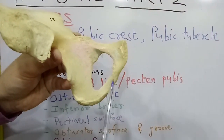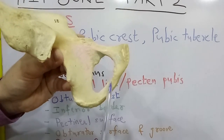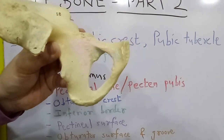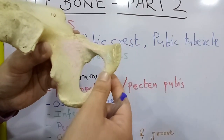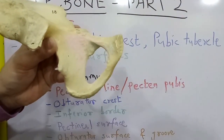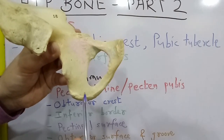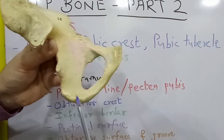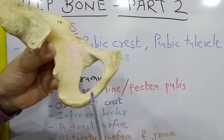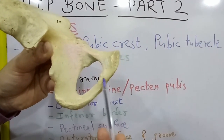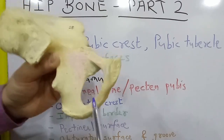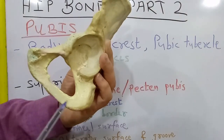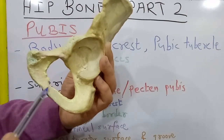Coming to the inferior ramus: the inferior ramus of pubis meets with the ramus of ischium together. This bone is known as the conjoint ischiopubic rami.